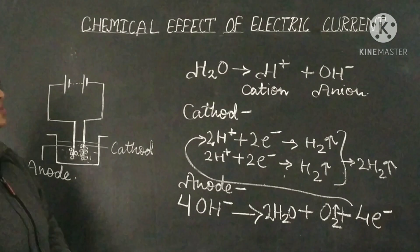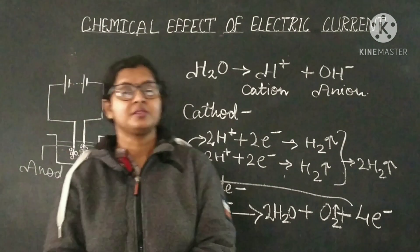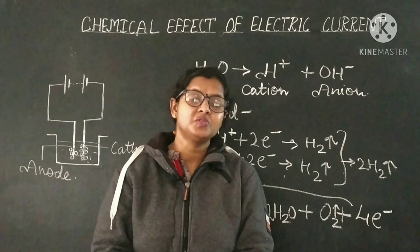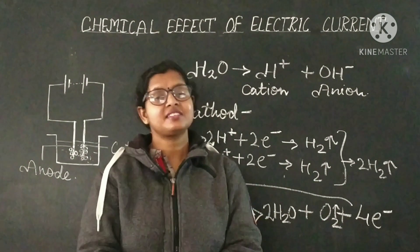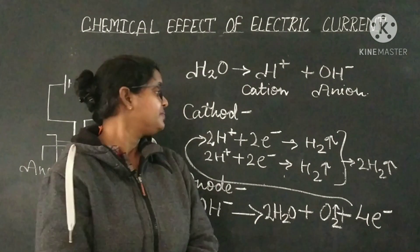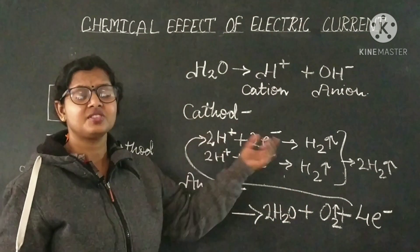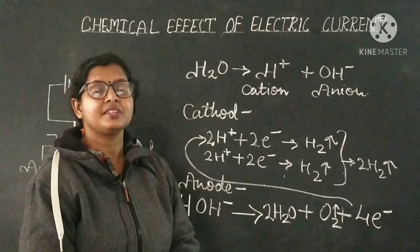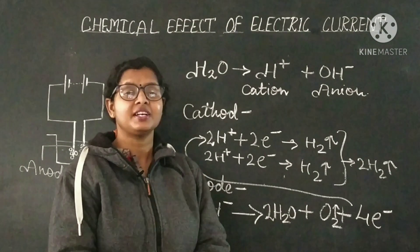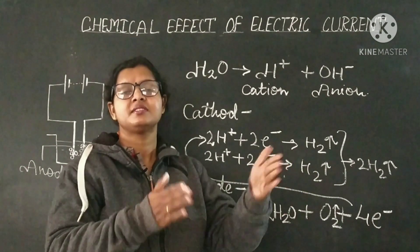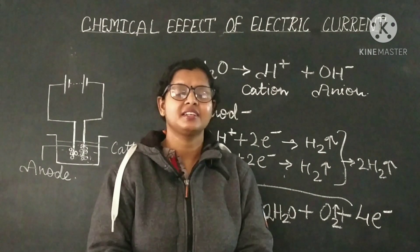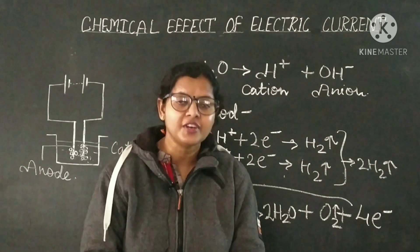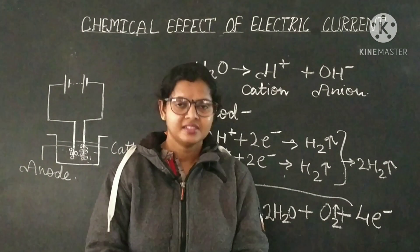That was all about the chemical effect of electric current. Products are formed at both electrodes: cations move to the cathode and anions move to the anode. In order to become stable and free from their charges, some ions lose electrons and others gain electrons. By accepting and donating electrons, they form separate products at the two electrodes — and that is the chemical effect of electric current. I hope you are clear with this effect. If you have any questions, please ask. Thank you.